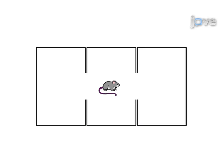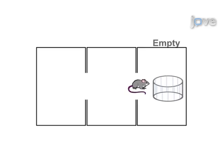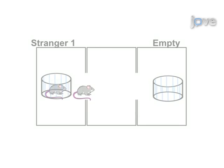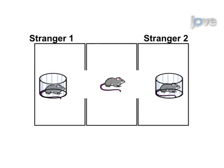After habituating to a central chamber, the experimental mouse is allowed to freely explore two other chambers, one with an empty cup and another containing an unfamiliar mouse. The next step allows the mouse a free choice between an already familiar animal and a newly introduced second mouse.